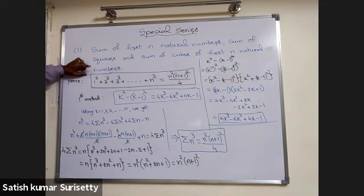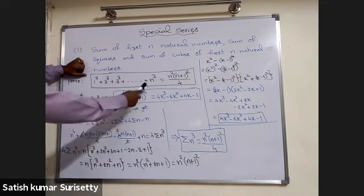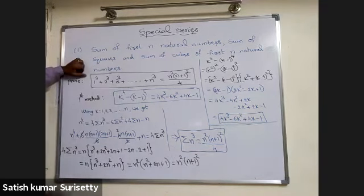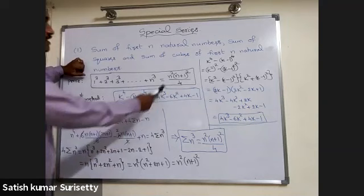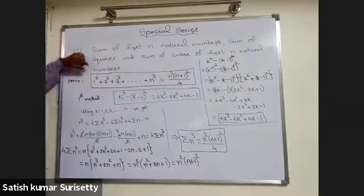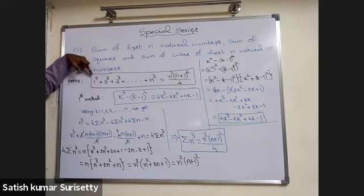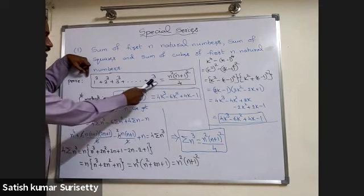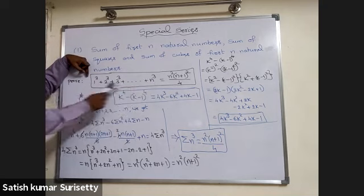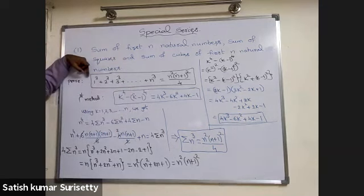Next, 1 cubed plus 2 cubed plus 3 cubed and so on n cubed — the sum of cubes of first n natural numbers. This can be proved as n squared into n plus 1 whole squared upon 4. Note that 1 cubed, 2 cubed, 3 cubed are not in arithmetic progression, so no direct formula for AP, GP, or HP applies.